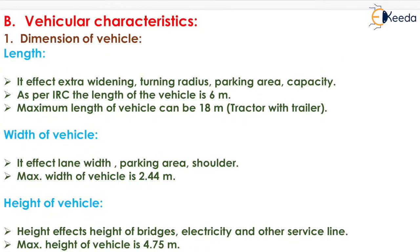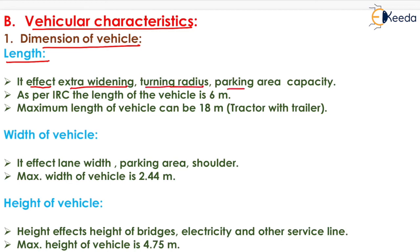In vehicular characteristics, the first topic is the dimensions of the vehicle. The length of a vehicle affects extra widening on the road, turning radius, and parking area capacity. As per the Indian Road Congress, the maximum length of a vehicle is 6 meters, extendable up to 18 meters for a tractor with trailer.